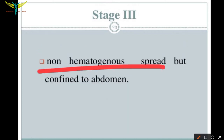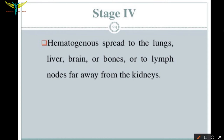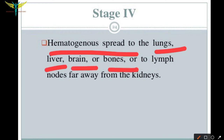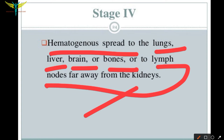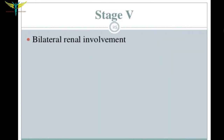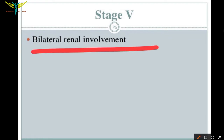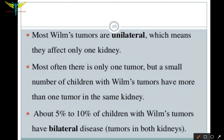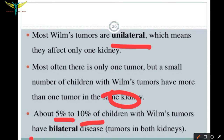Stage three involves non-hematogenous spread but the disease is confined to the abdominal cavity. Stage four is when hematogenous spread reaches the lungs, liver, brain, bones, or lymph nodes far from the kidney — this is a severe stage due to metastasis. Stage five is when both kidneys are involved, known as bilateral renal involvement. Most Wilms' tumors are unilateral, though 5 to 10 percent of children with this tumor have bilateral disease, and some may have more than one tumor in the same kidney.